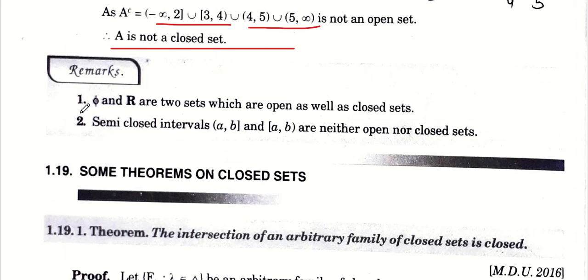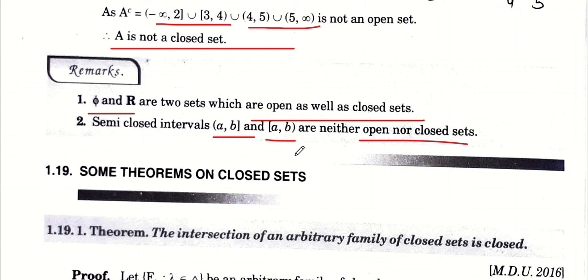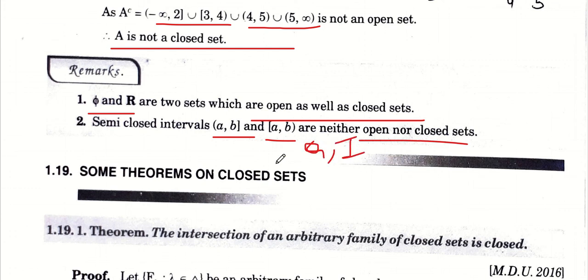Simple remarks: ∅ और R ऐसे sets हैं जो open भी हैं और closed भी हैं। Semi-open और semi-closed intervals neither open nor closed होते हैं, और इसके examples Q और irrational numbers हैं।